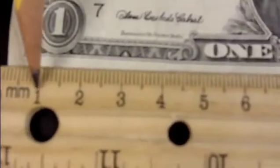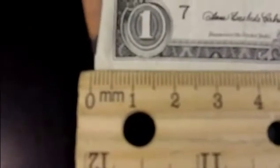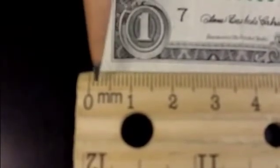One centimeter is 10 millimeters. There are 10 lines here. Everything is multiples of 10. So, we'll just count up.